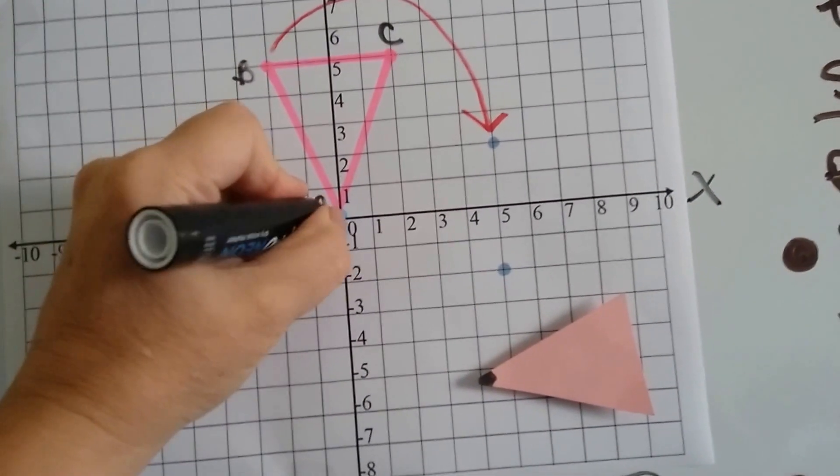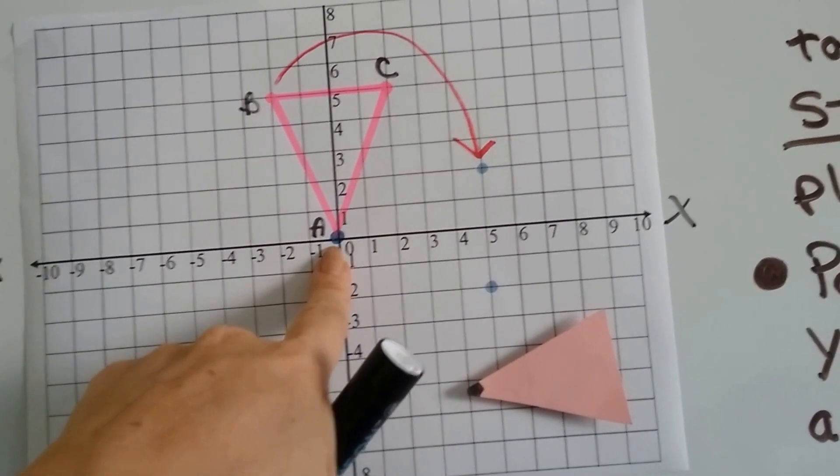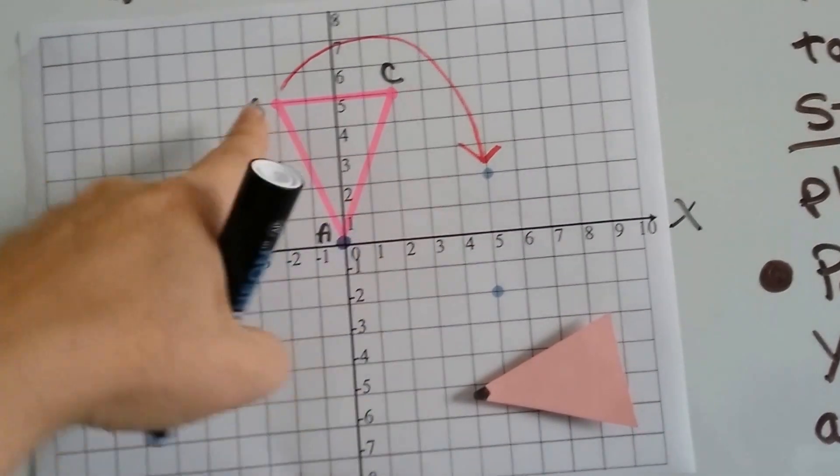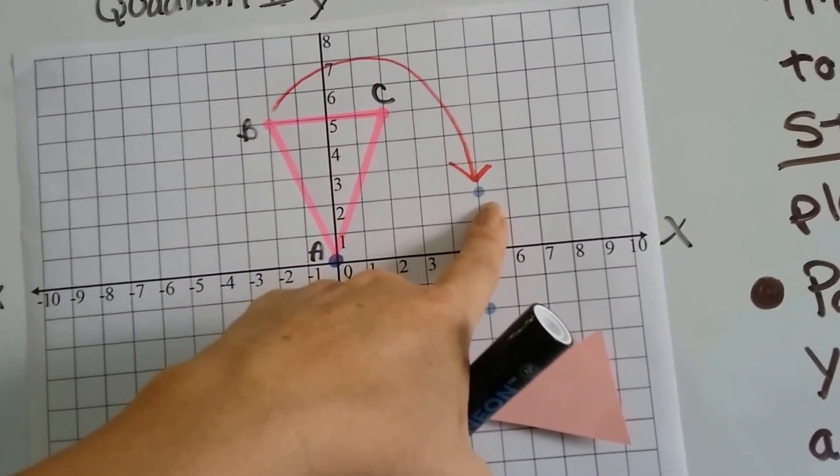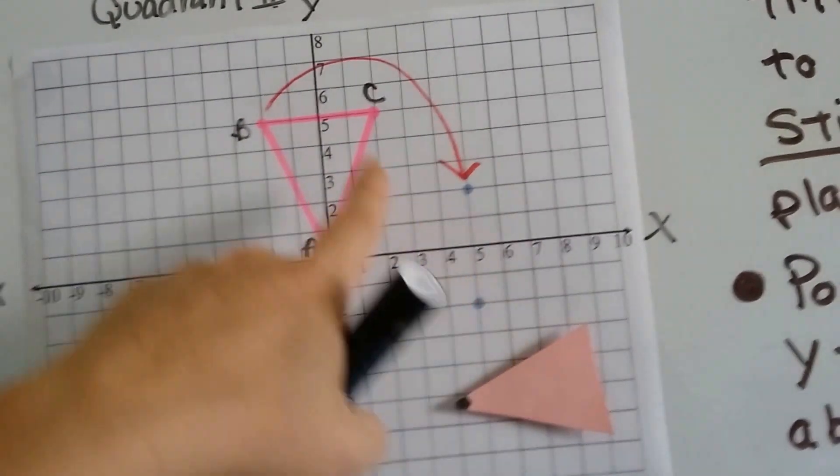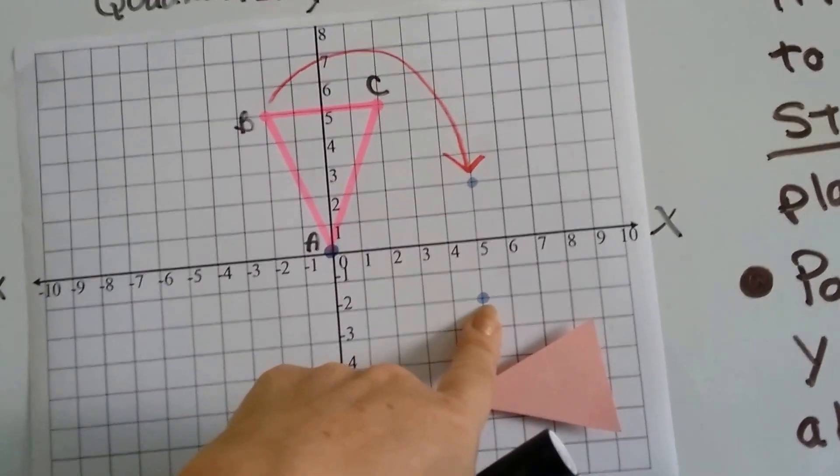So, we can move this, and this point is the center of rotation, this 00 origin. Point B is going to move 90 degrees and come around to here. Point C is going to move 90 degrees and come to here.